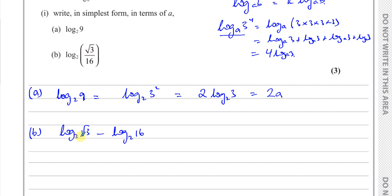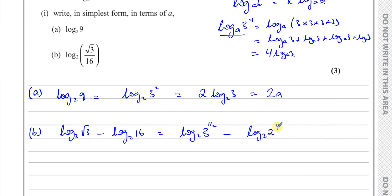The square root of 3 can be written in index form as 3 to the power of a half, so we have log to the base 2 of 3 to the power of a half. And I can work out log to the base 2 of 16 — it means 2 to the power of something gives 16, which is 4. Alternatively, write 16 as 2 to the power of 4. This gives a half times log to the base 2 of 3, minus 4 times log to the base 2 of 2.